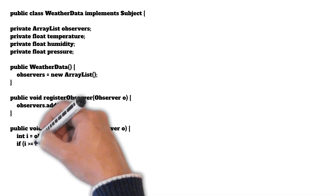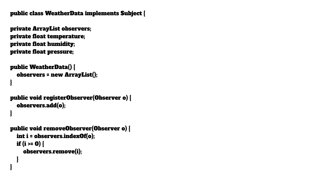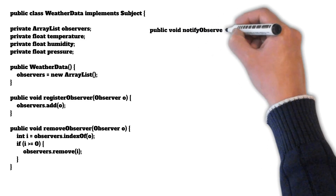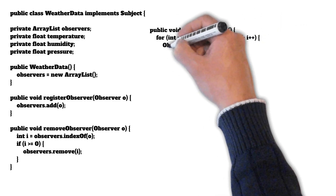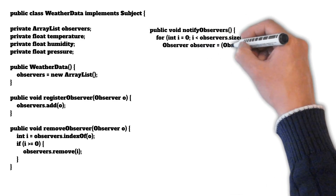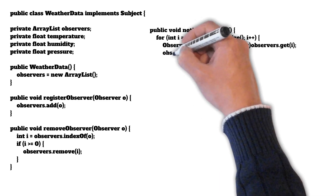The registerObserver method simply adds the observer object into the observers list initialized in the constructor. Similarly the removeObserver method first finds out at which index the given observer object is in the ArrayList, then removes it from that location. The notifyObservers method iterates over the observers list and calls the update method on each observer, passing it the temperature, humidity, and pressure values.